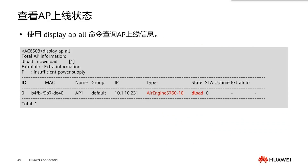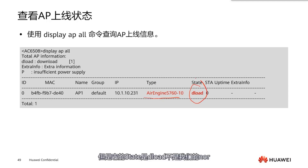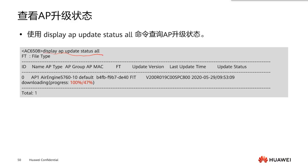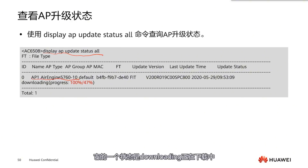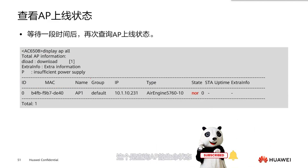Next, use 'display AP all' to check information about the APs coming online. The AP is now online but its state is 'download', not 'normal', indicating the upgrade is in progress. We can also check the upgrade status using 'update status all' — here we can see this AP model is in a state of downloading, currently at 47% progress. This is how we check the upgrade status of the AP.